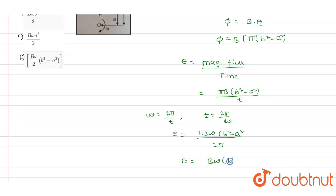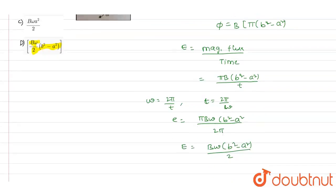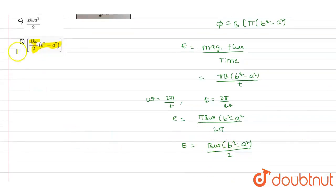Out of these four options, if you observe option B, B omega divided by 2 of b squared minus a squared, this is what we have got in our solution. So according to that, option D is the correct answer for this question. Thank you.